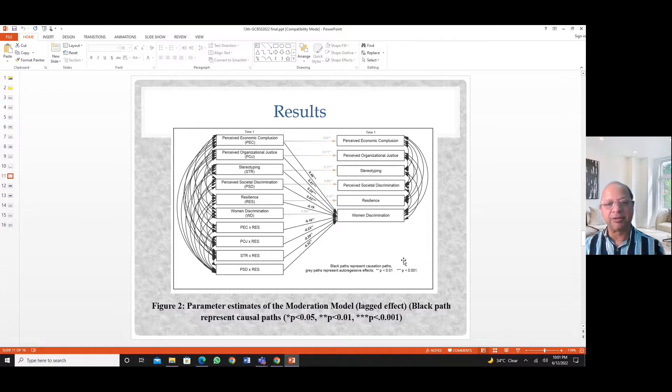stereotyping 0.53, highest, highly significant. Resilience has a negative impact on women's discrimination as hypothesized. And then the multiplied parts, which is we are looking at the moderation effects, also says that there is a moderation of resilience on all these factors. The causal effects are there as well. Similar figures shown in the coefficient values in this model.